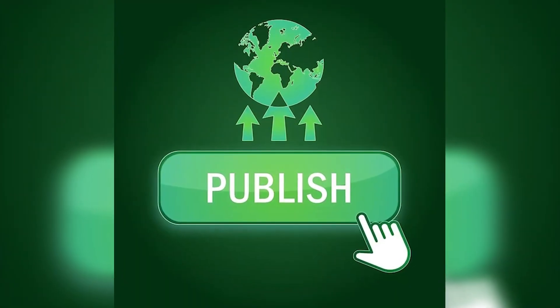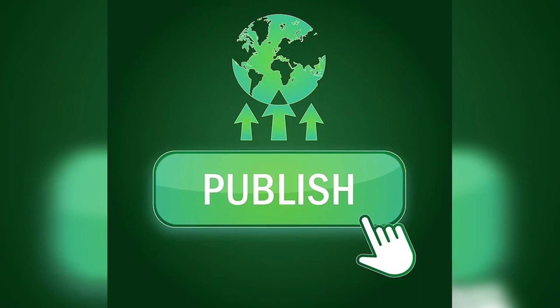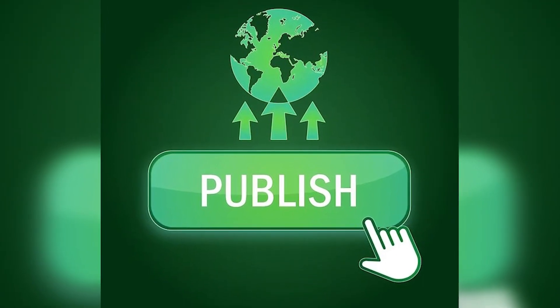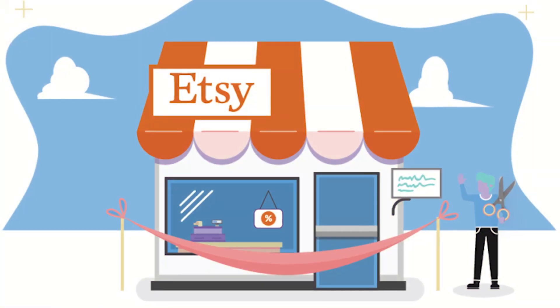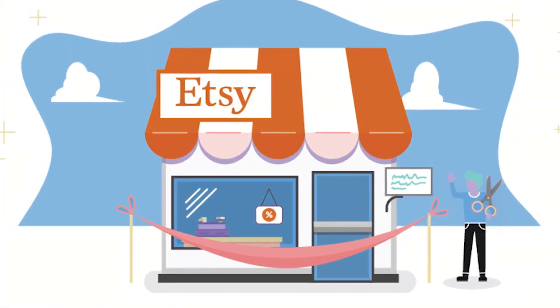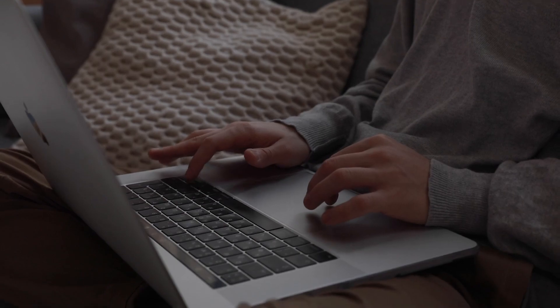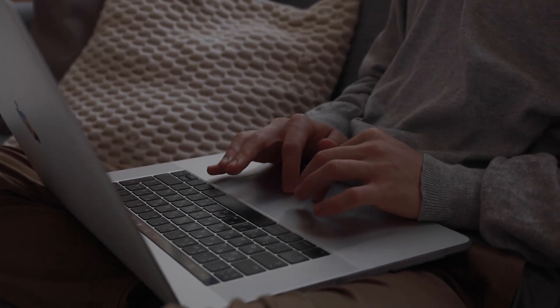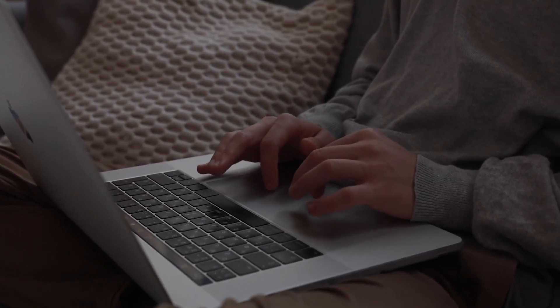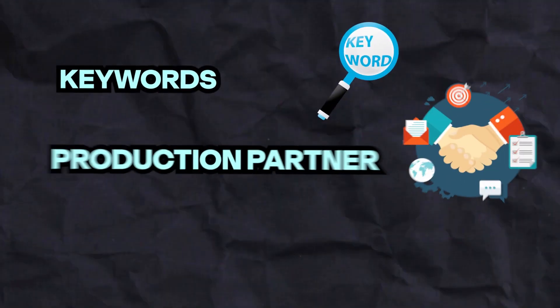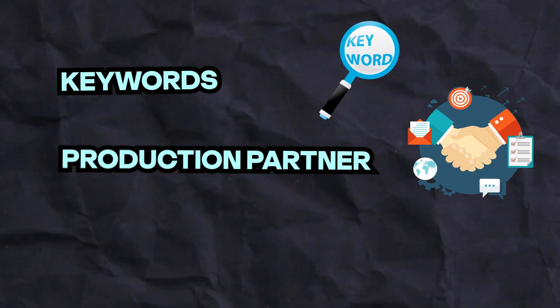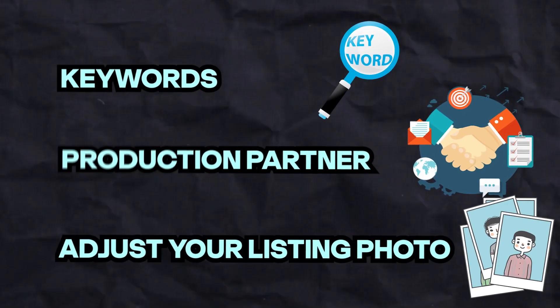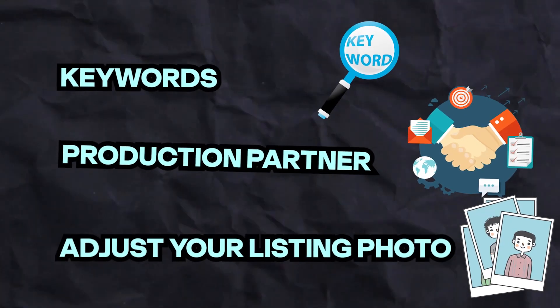Once you have completed everything, simply click the publish button and your product will be uploaded to your connected Etsy store. From there, we recommend that you edit your Etsy listing and add things such as keywords, production partners, and adjust your listing photo to be zoomed in for easiest visibility.